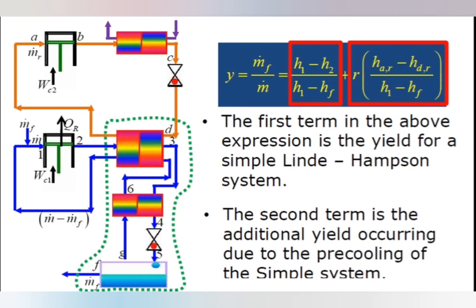This system can be used for the liquefaction of different types of gases like helium, neon, nitrogen, hydrogen, etc. Ultimately, we can increase the yield by adopting this particular system as compared with the simple Linde-Hampson system. Thank you.